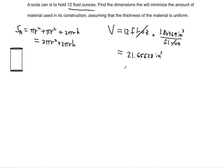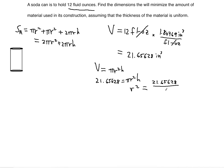Now we're ready to use the volume formula for this soda can: V = pi r squared h. Since we already solved for the volume, we substitute: 21.65628 equals pi r squared h. We can solve for r squared in terms of h and plug that into the surface area so we're dealing with h only. So r squared becomes 21.65628 divided by pi h.